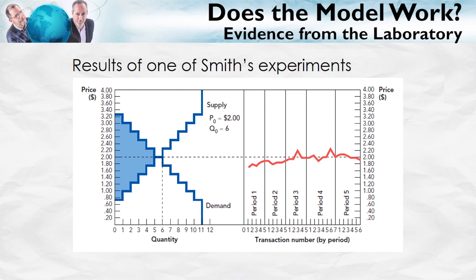So what happened? Here are the results from one of Smith's remarkable experiments. The demand and supply curves calculated by Smith are shown on the left. The model predicts an equilibrium price of $2 and an equilibrium quantity of 5 or 6 units. What actually happened is shown on the right: the actual market price quickly went to $2, or very close to it, and the market quantity quickly went to 5 or 6 units. Moreover, exactly as predicted by the model, the buyers with the highest values bought and the sellers with the lowest costs sold. In short, almost all the gains from trade were exploited, leading to near-maximum efficiency, exactly as predicted by the model.